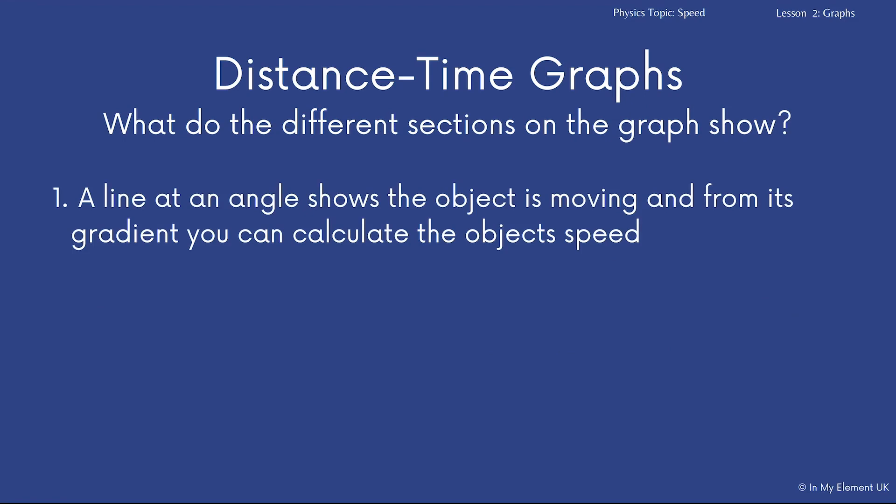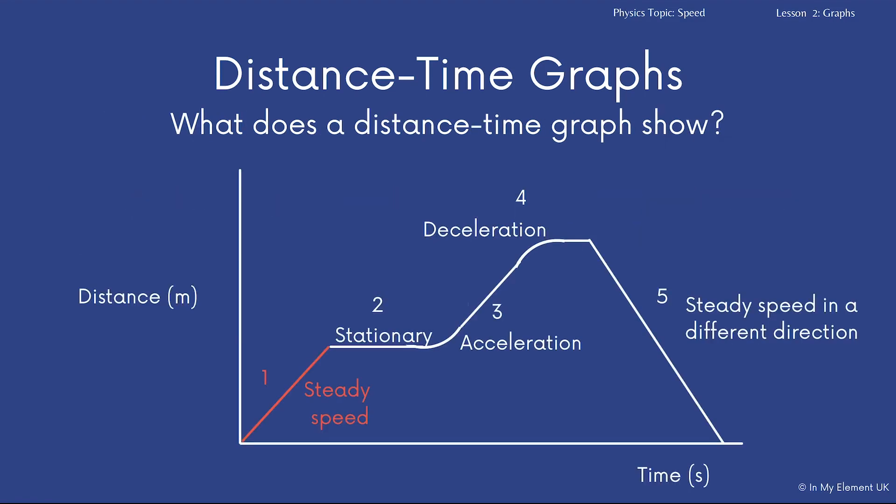So at point one, the line's at an angle and it shows the object is moving from it and from its gradient, you can calculate the object's speed. Highlighted it in red here. So you can use that to calculate the speed of the objects because you can measure, you can do a line on there.